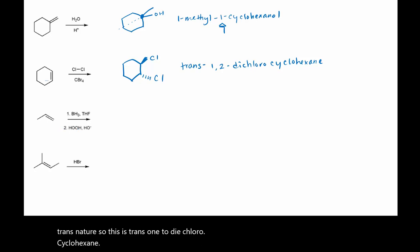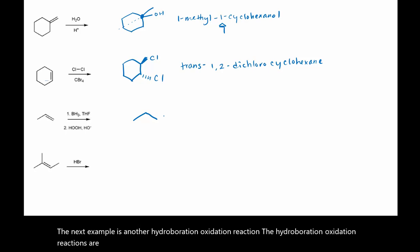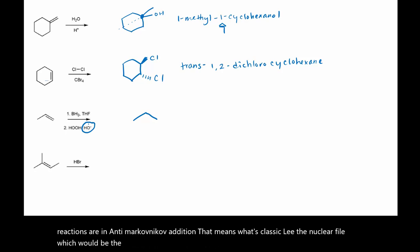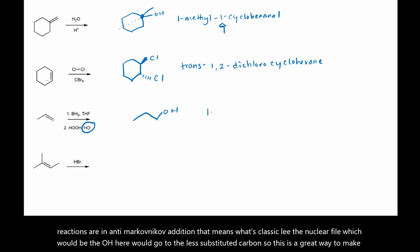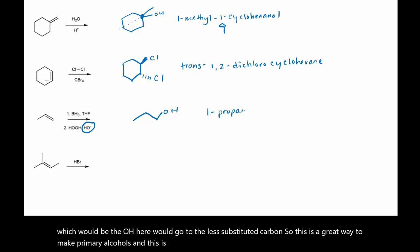The next example is another hydroboration oxidation reaction. Hydroboration oxidation reactions are an anti-Markovnikov addition. That means the OH — which is classically the nucleophile — would go to the less substituted carbon. So this is a great way to make primary alcohols, and this is 1-propanol.